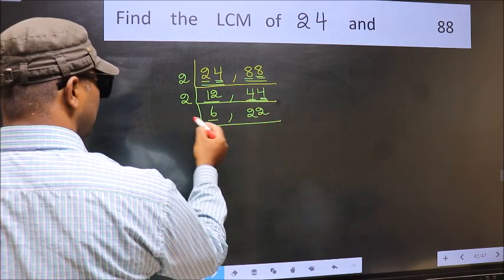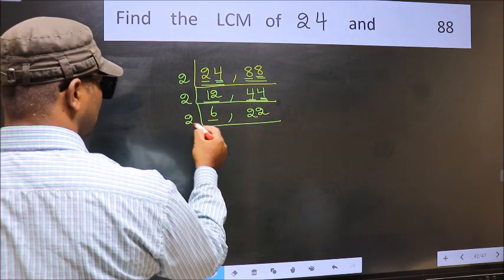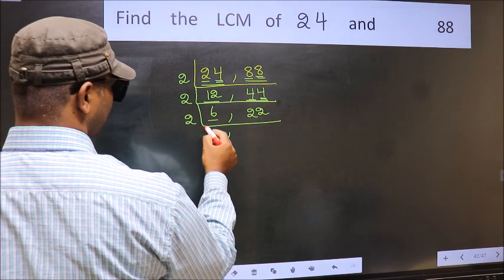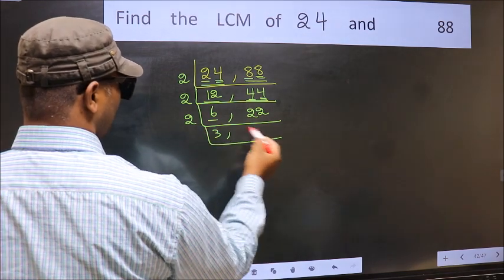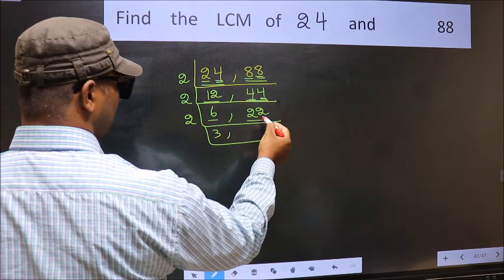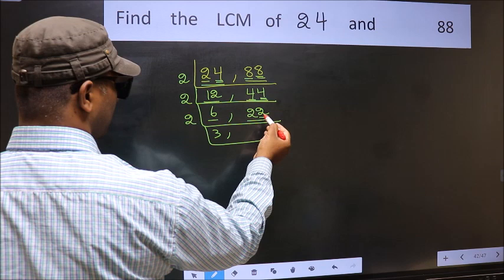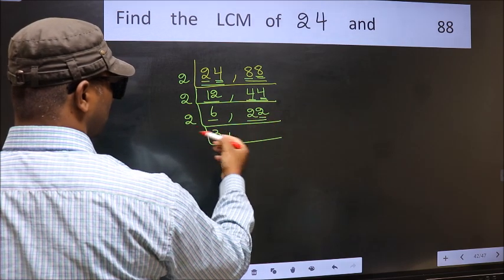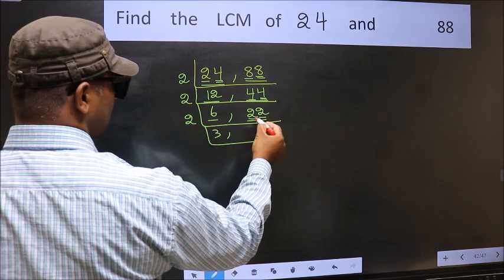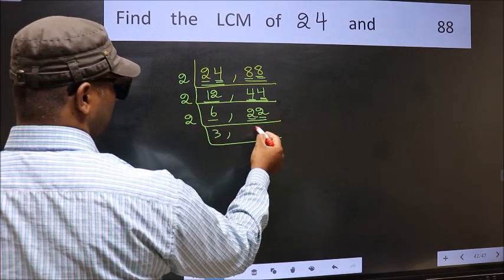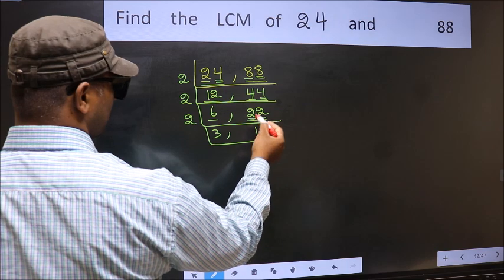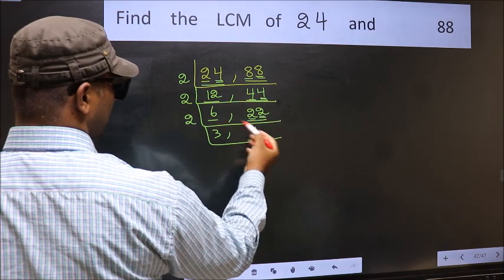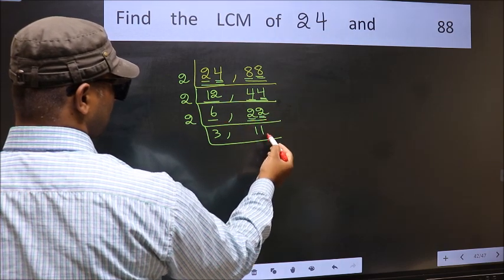Now here we have 6. 6 is 2 times 3, which gives 6. The other number 22 — last digit 2, so this is divisible by 2. First number 2: when do we get 2 in the 2 table? 2 times 1 is 2. The other number 2: 2 times 1 is 2.